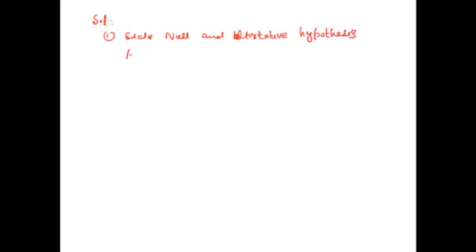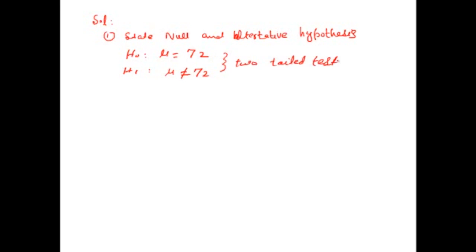The null hypothesis: mean is equal to 72, and the alternative hypothesis is mean is not equal to 72. This is a two-tail test. Alpha is 1%, which is equal to 0.01.